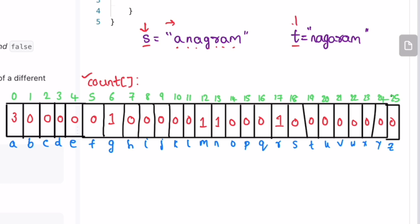Now let's iterate through string t from left to right and use the count array to decrement the character frequencies according to the characters present inside t. Starting with n — it was 1, it becomes 0. Then a — it was 3, it becomes 2. Then g — it was 1, becomes 0. Then a — it becomes 1. Then r — becomes 0. Then a — becomes 0. Then m — becomes 0. Now we have processed both strings s and t.